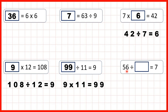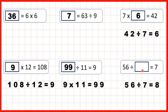Now here we have 56 divided by something equals 7. In this question it's the divisor — the second number in the division — that's missing. When we have a missing divisor we still use division to find our missing number, so we divide 56 by 7. That's 8, so our missing number is 8. We can check: 7 times 8 read backwards is 56.